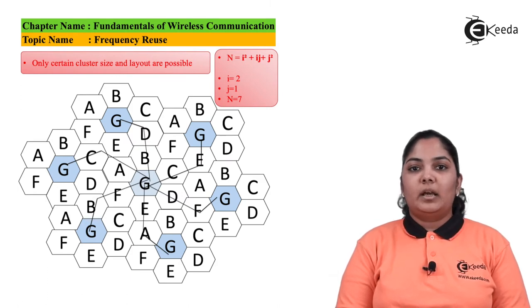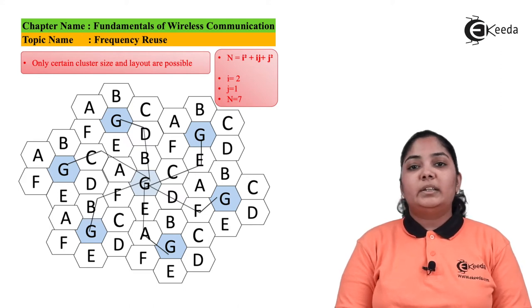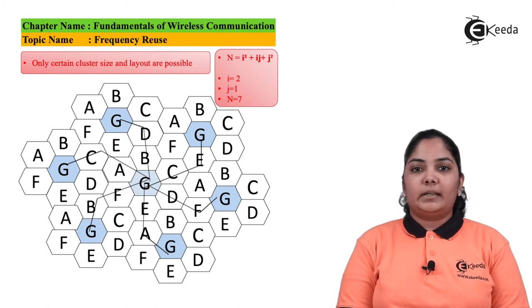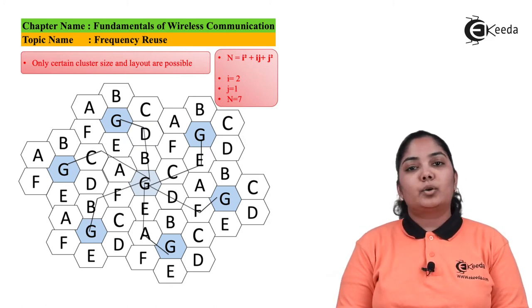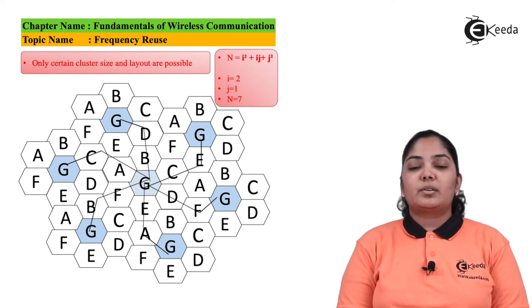To find the co-channel cell, move i steps (two steps) ahead in any direction — because of the hexagonal structure there are six directions available — then rotate 60 degrees anti-clockwise, then move j steps (one step) ahead. The cell you reach is your co-channel cell, meaning it uses the same frequencies. In the first tier there are six co-channel cells. It is very important that co-channel cells are separated enough; if not, there are high chances of interference since they use the same set of frequencies.